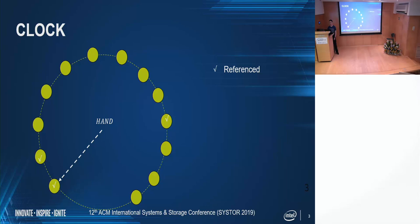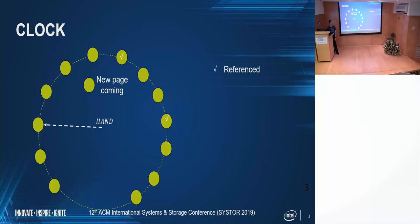If a page in the CLOCK is accessed, we set a reference bit of it. Then, given a new page coming in, we will examine the LRU pages with the hand. Any reference bit set on those LRU pages gets reset. However, the hand will stop at the page without the reference bit set, and this becomes the replacement victim.